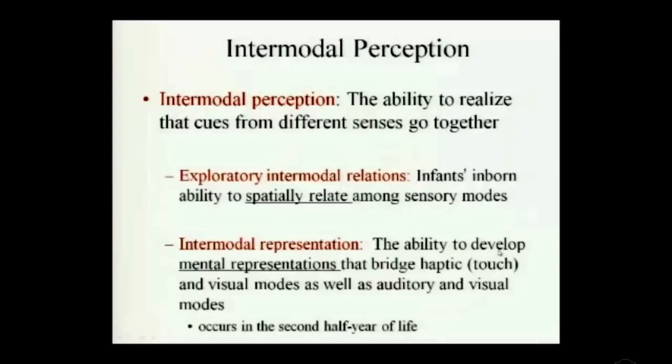They did an experiment to see if young children could incorporate touch with vision internally. They had a mirror reflecting a fluffy bear. On some trials, the actual bear matched the fluffy feeling it would produce. On other trials it didn't — it would be something completely different, hard or plastic. So the vision and the actual haptic experience were mismatched. They wanted to see if children could detect the difference between what it looked like and what it should feel like — they thought they were reaching for something reflected in a mirror, but a different toy was behind it. When the child reached for the fluffy toy in the mirror, they would touch something spongy — a mismatch.